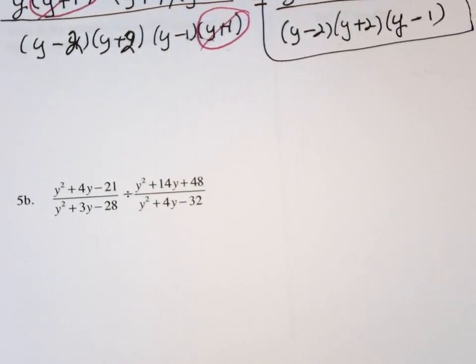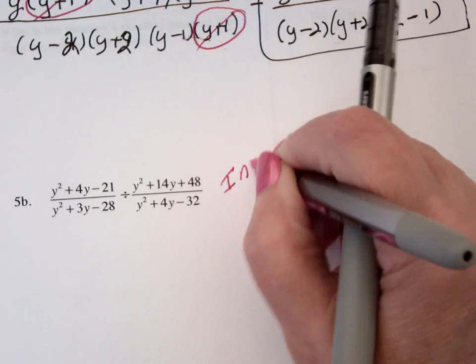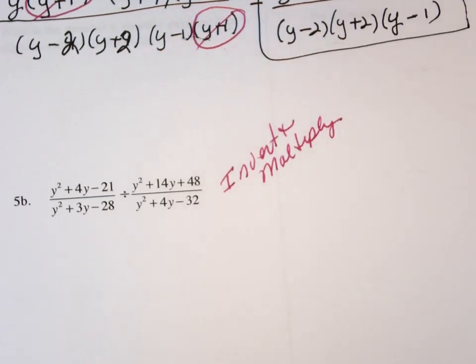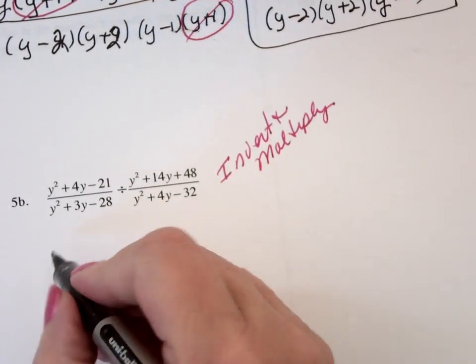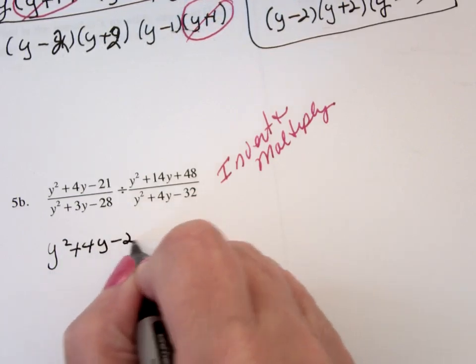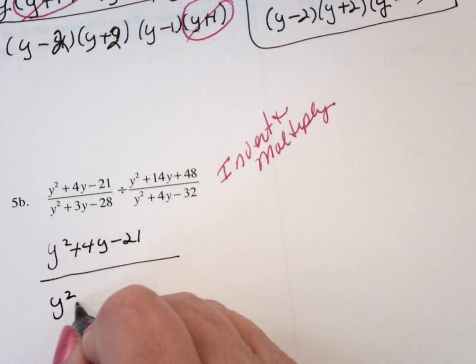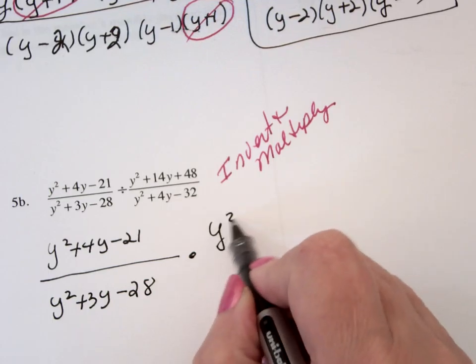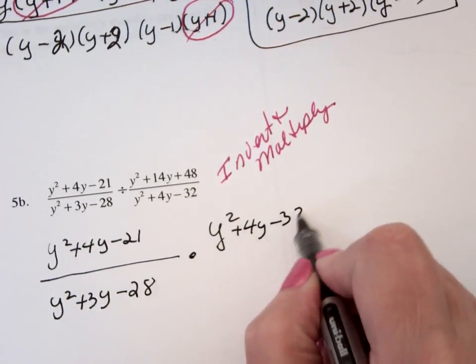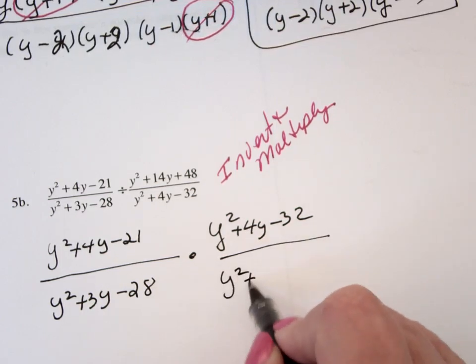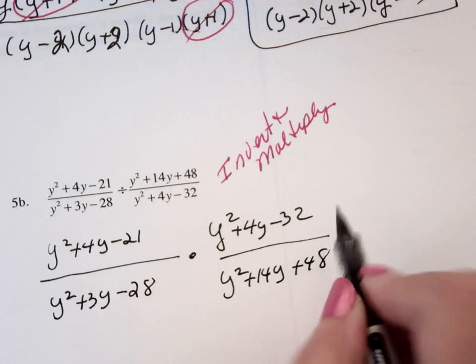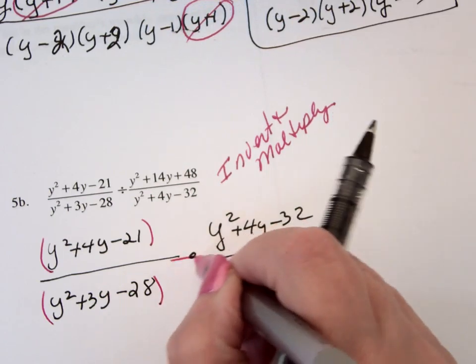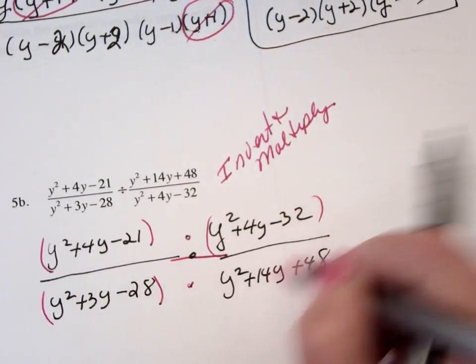Same issue is on this one, and the first thing I do is to invert and multiply. So I'm going to end up with y squared plus 4y minus 21 over y squared plus 3y minus 28 times y squared plus 4y minus 32 over y squared plus 14y plus 48. And now we did what we did before, this is a grouping, we're going to multiply, that forms a single fraction.